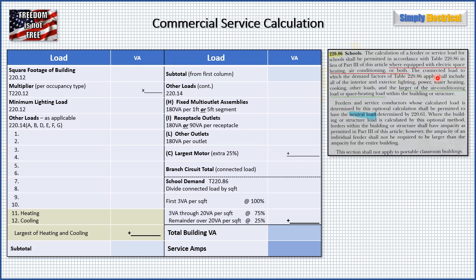It goes on to say the connected load to which the demand factors of Table 220.86 apply shall include all of the interior and exterior lighting, power, water heating, cooking, other loads, and the larger of the air conditioning load or space heating load within the building. So we're going with the connected load of basically everything in the building, and the only exception is we're taking the larger of the air conditioning or space heating — leaving the lesser of those two out, but taking everything else.